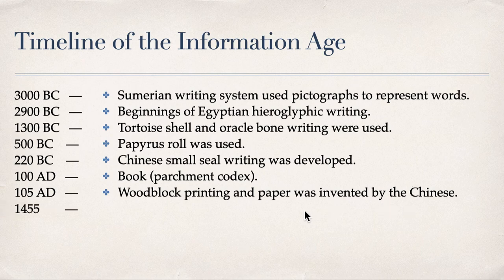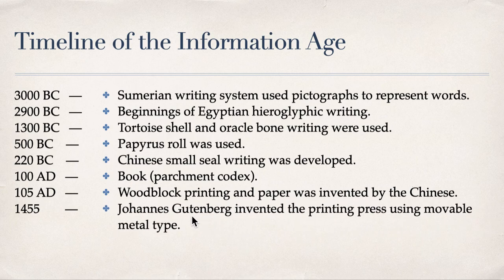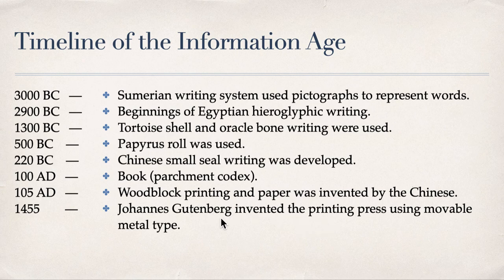That's a big leap, but let's go to the highlights. Around 1455, Johann Gutenberg invented the printing press. The first book printed is the Gutenberg Bible, and Johann Gutenberg is credited as the inventor of the first printing press using movable metal type.